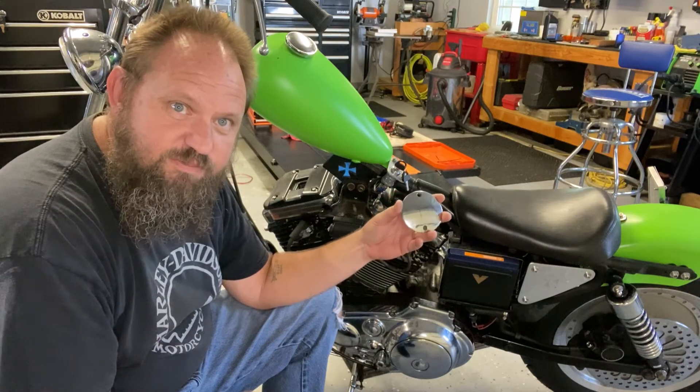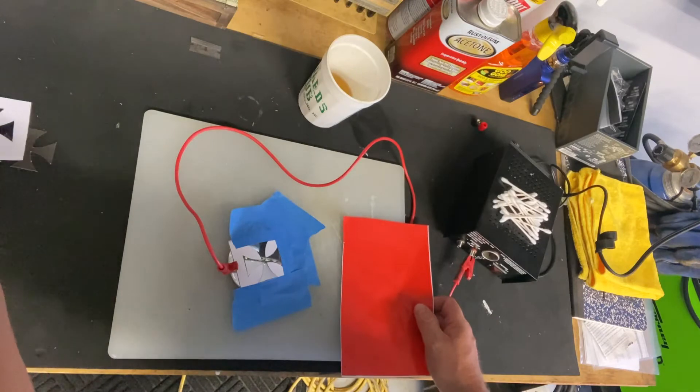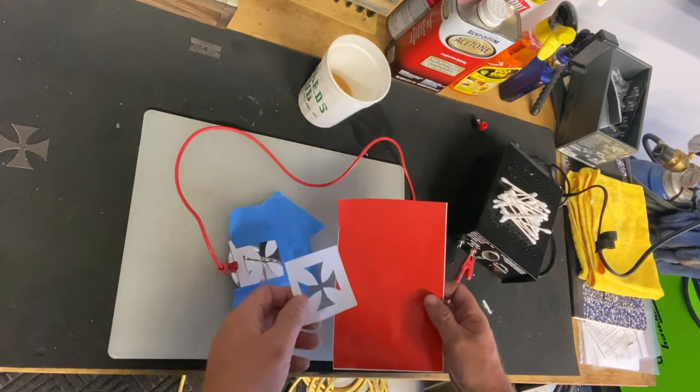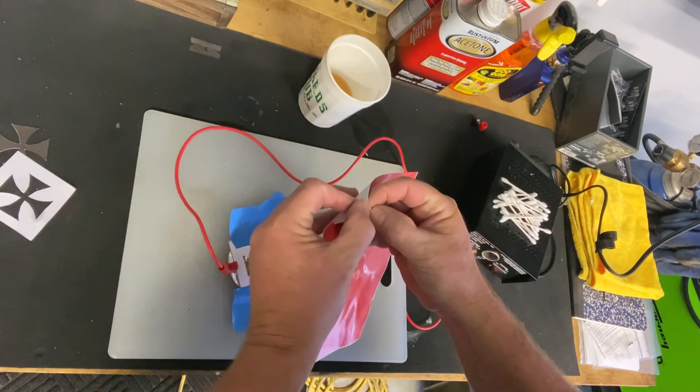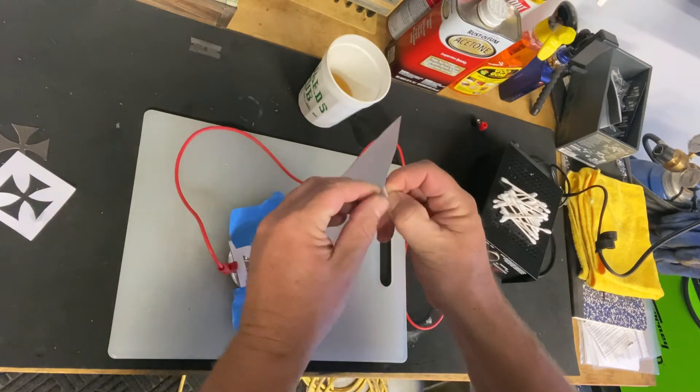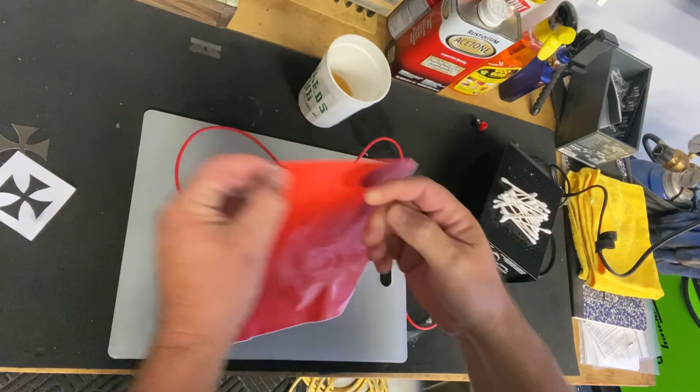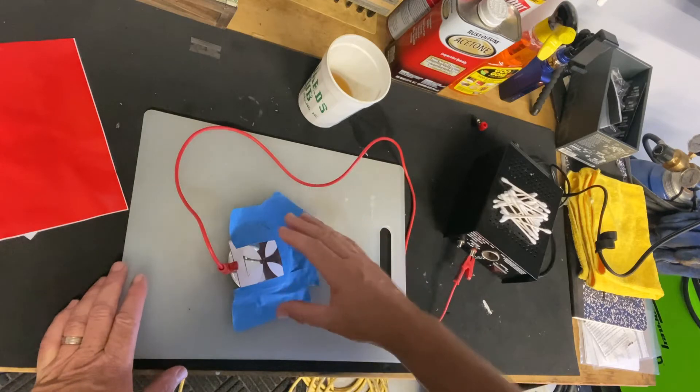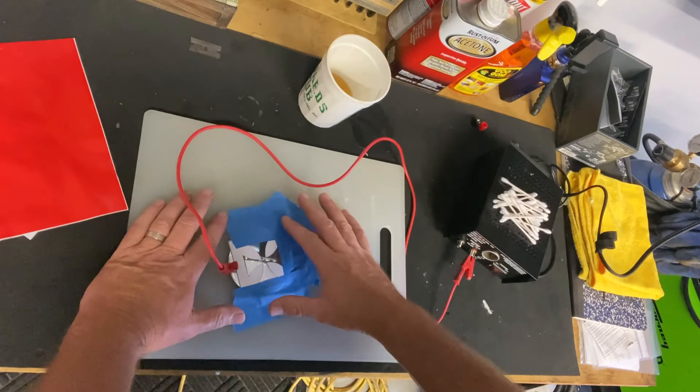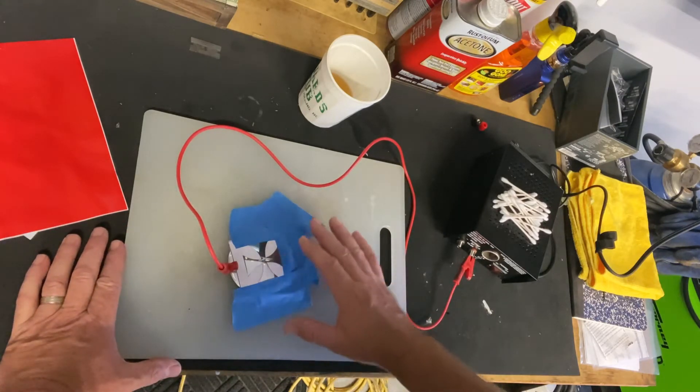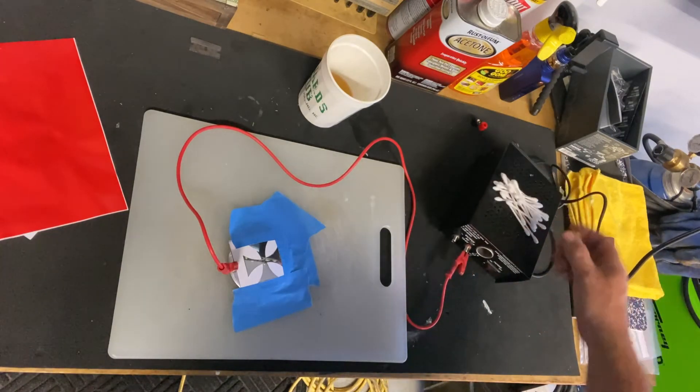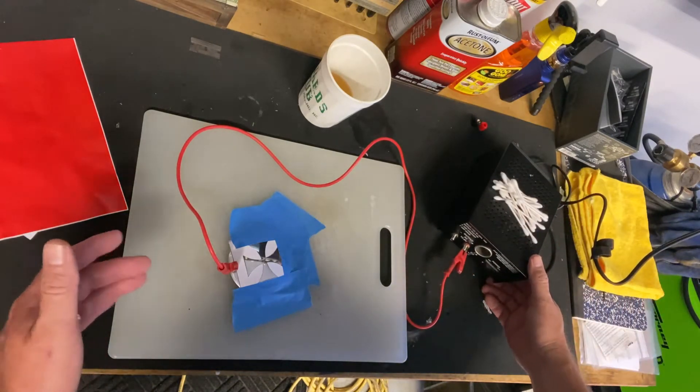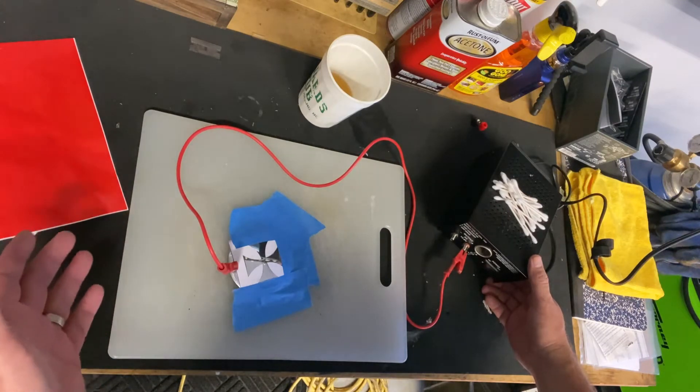So what I already did is I created a stencil just out of some adhesive vinyl. This is just vinyl that's backed with an adhesive that you can pull the back off of, and then it's sticky. So it'll stick to the ignition timing cover. And I've got it kind of just masked out to where I'm going to do the etching. Now I have this bench power supply. I've seen people do this with just a battery, even just a little 9-volt battery.